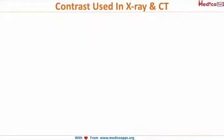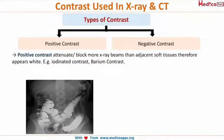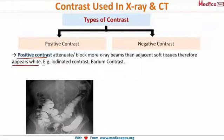Contrast media in X-ray and CT. There are two types of contrast: positive contrast and negative contrast. Positive contrast agents attenuate or block more X-ray beams than adjacent soft tissue, and therefore appear white on imaging.